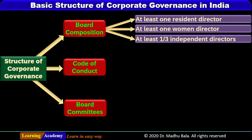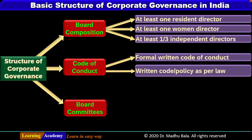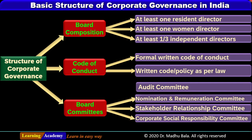In board composition, it includes at least one resident director, at least one women director, and at least one third of independent directors. The code of conduct can be a formal written code of conduct or written code policy as per law. Board committees include the audit committee, nomination and remuneration committee, stakeholder relationship committee, and corporate social responsibility committee. We will discuss each of these structures in more detail in the further slides.